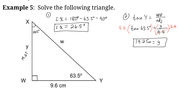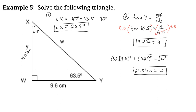We're just missing side W, the hypotenuse. Pause the video and find W using either a primary trig ratio or Pythagorean theorem. Using Pythagorean theorem, W ≈ 21.51 centimeters. We've now found all the missing sides and angles in this right angle triangle.